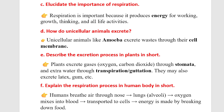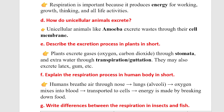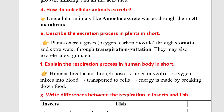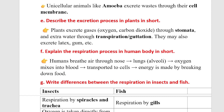Question F: Explain the respiration process in the human body in short. In the human body, humans breathe air through the nose. Air travels to the lungs and alveoli. Oxygen is mixed into the blood and then transported to the cells. In the cells, energy is made by breaking down food.